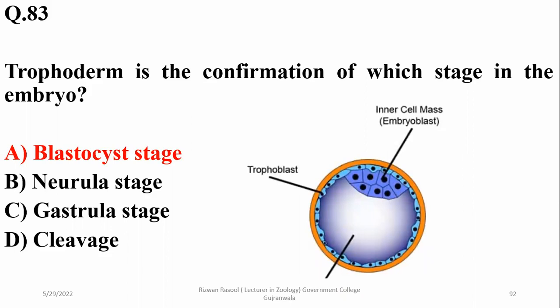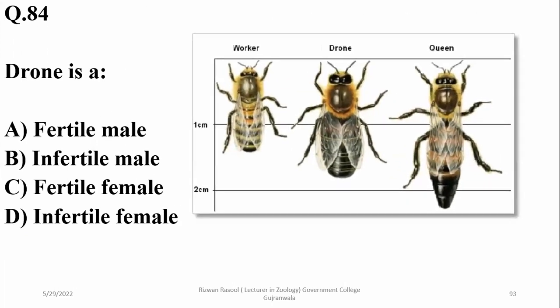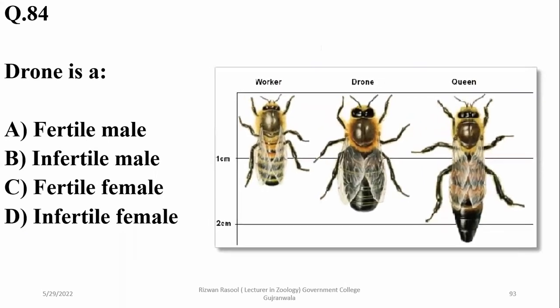Trophoblast and trophoderm cells — and drone in honeybees or other hymenopteran insects. Drone is the fertile male produced by mitosis, and the enlarged queen is also relevant here. Right option is alpha.